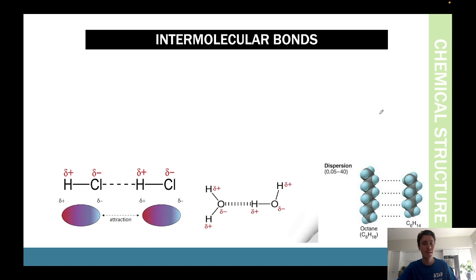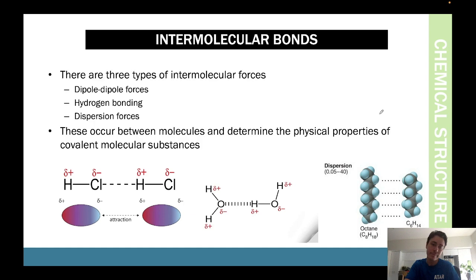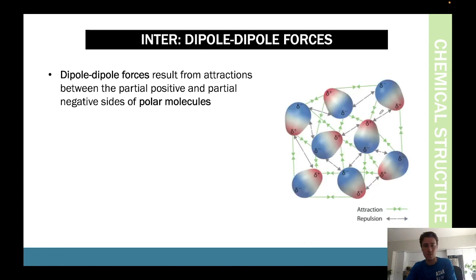Intermolecular bonds involve a little bit more. There are three types: dipole-dipole forces, hydrogen bonding, and dispersion forces. These occur between molecules and determine the physical properties of covalent molecular substances. Let's go through the first one — dipole-dipole.